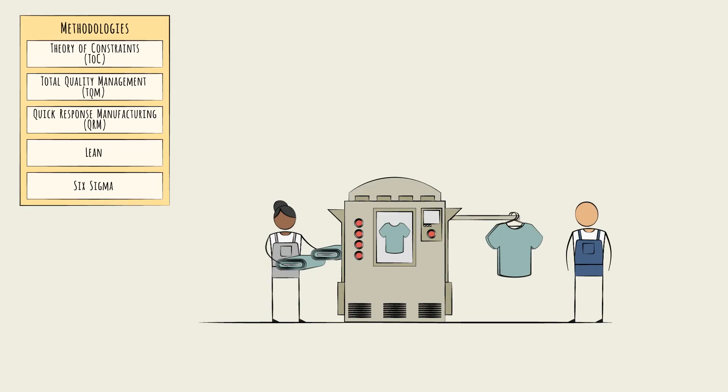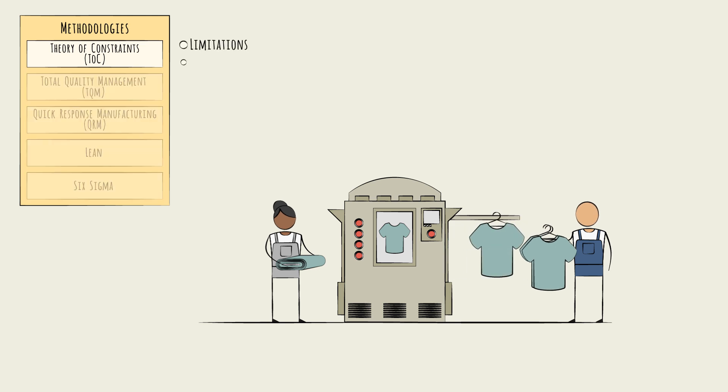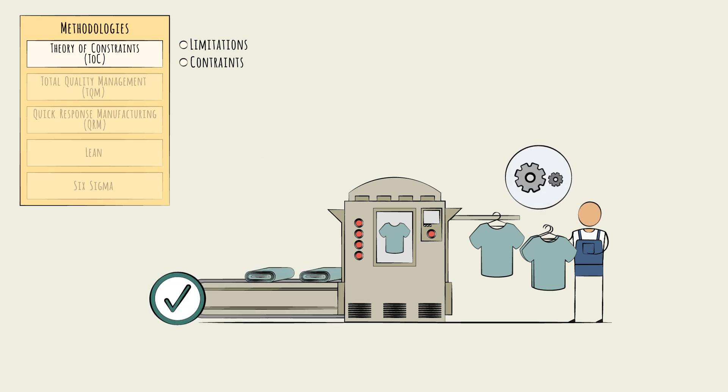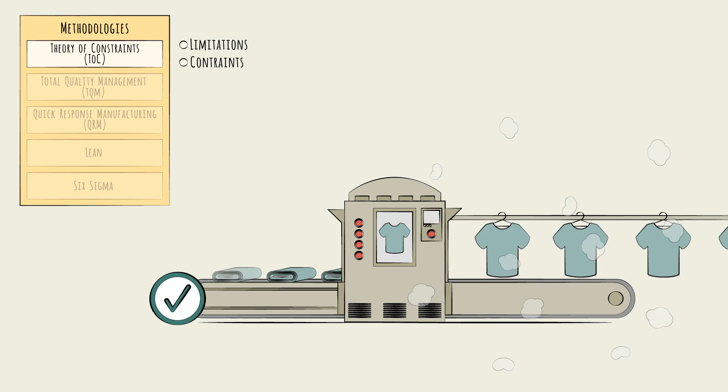Each school approaches optimization from a different focal point. For example, Theory of Constraints focuses on limitations, or constraints, like bottlenecks. Find a constraint and fix it. Then find the next constraint and fix that. And so on.